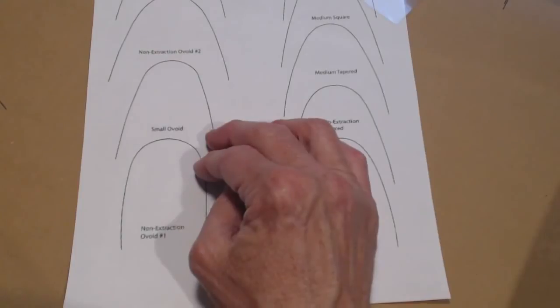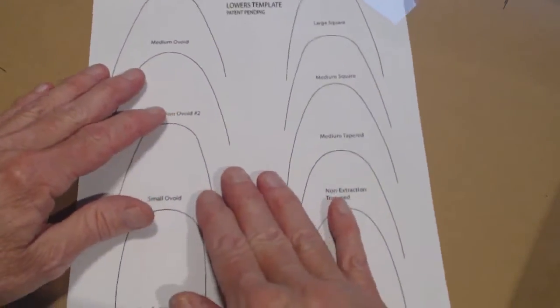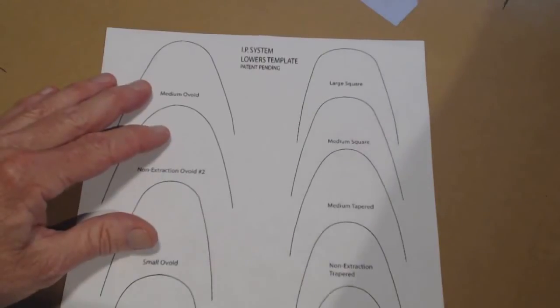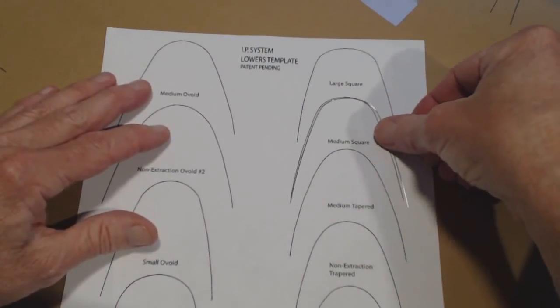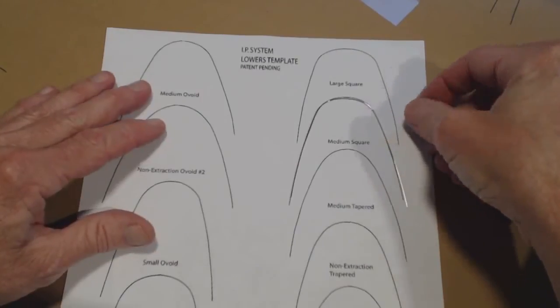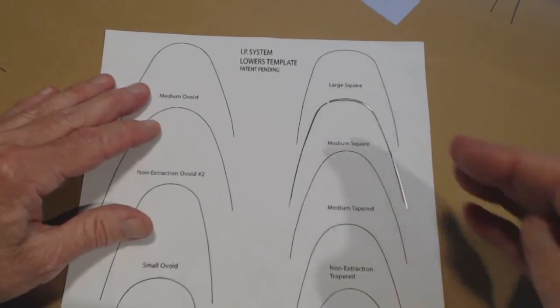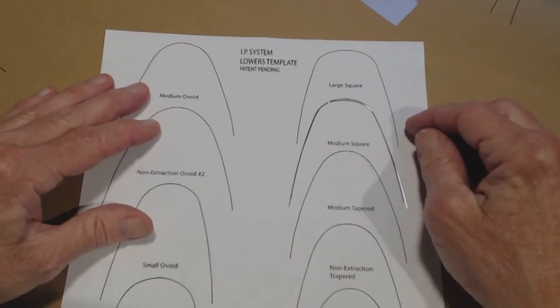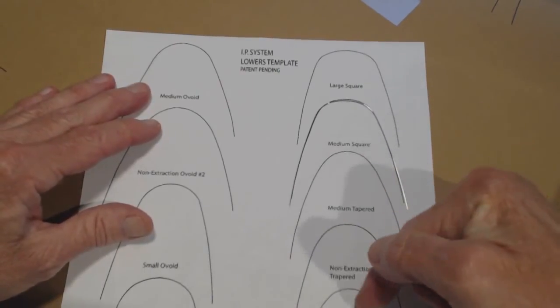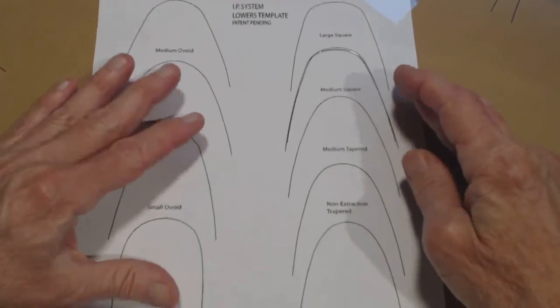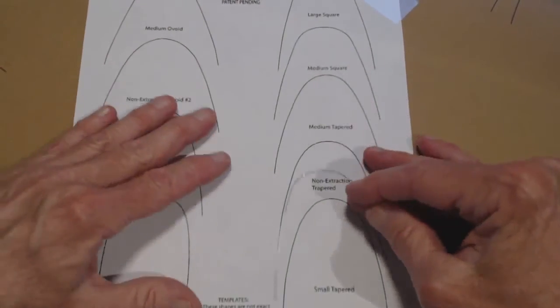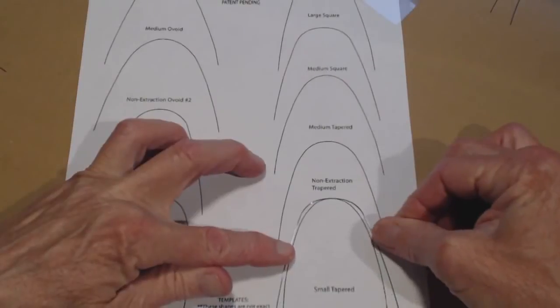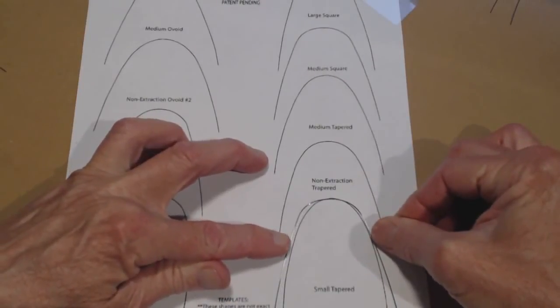So the next exercise, we're going to look at a medium square lower. And we're going to take one out of the package. And here's a medium square. And you see the medium square fits the template fairly accurately. It looks pretty nice. And then what we're going to do now is make this into a small taper. Let's go look and see what the difference is. And you can see what changes have to be made.